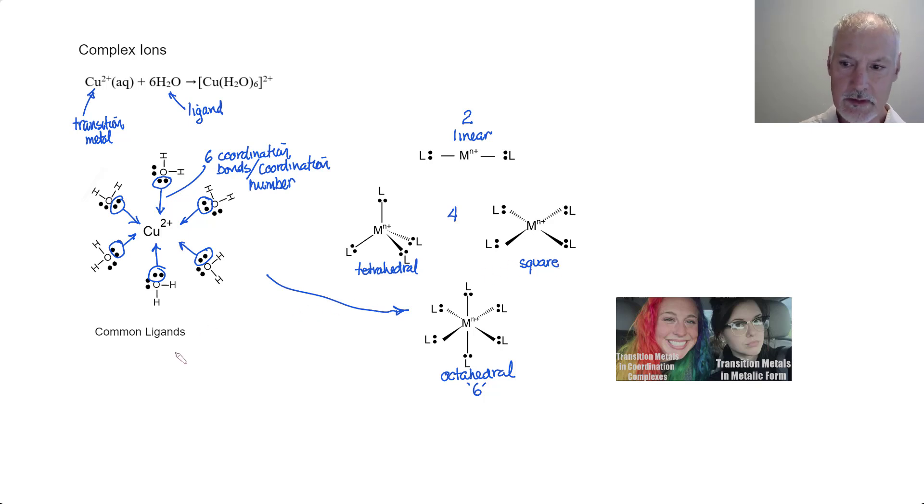Let's look at some examples of common ligands. First of all, we'll look at a group that are neutral. Water is a good example here. Other species would be ammonia and carbon monoxide. We can also have charged species in the forms of anions, and they would be things like chlorine, bromine, hydroxide, and cyanide.